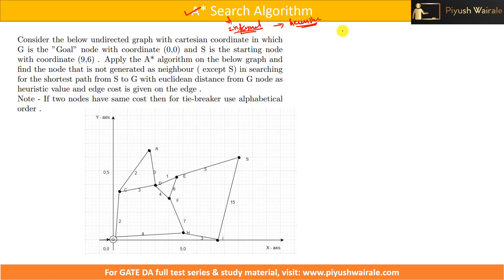In the case of A* search, we have f(n), which is the evaluation function. Based on this evaluation function, the node having the lesser value of f(n) is the one we go to.